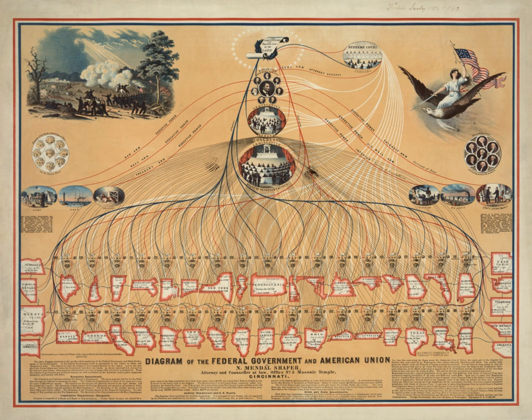Since the American Civil War, the powers of the federal government have generally expanded greatly, although there have been periods of legislative branch dominance — e.g., the decades immediately following the Civil War — or when states' rights proponents have succeeded in limiting federal power through legislative action, executive prerogative, or by constitutional interpretation by the courts. One of the theoretical pillars of the U.S. Constitution is the idea of "checks and balances" among the powers and responsibilities of the three branches of American government: the executive, the legislative, and the judiciary.